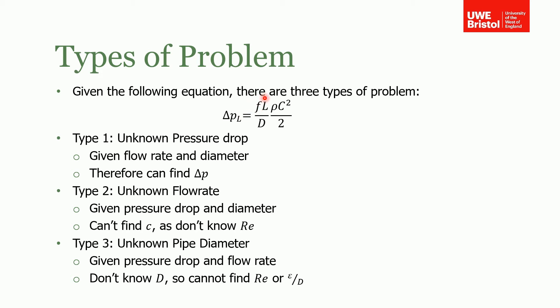So the variables are the friction factor, the length of the pipe, the diameter of the pipe, the density of the fluid, and also the velocity of the fluid. There are three different types of problem and three different ways that you need to go about solving them.